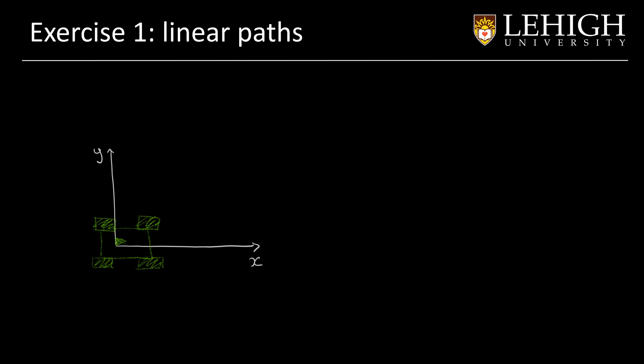For the exercise, you can use your favorite programming language to plot the configuration space of the following sequence of paths. First, we will rotate the car 45 degrees. And then, we will move forward 2 units.